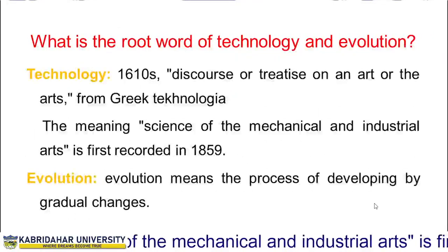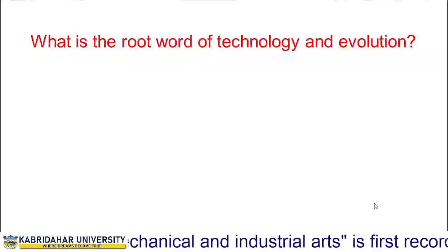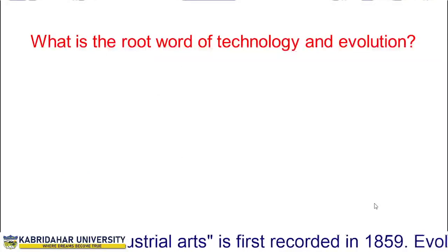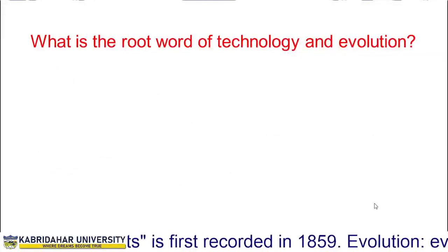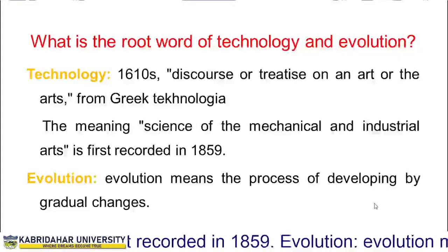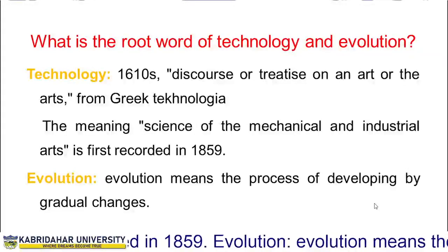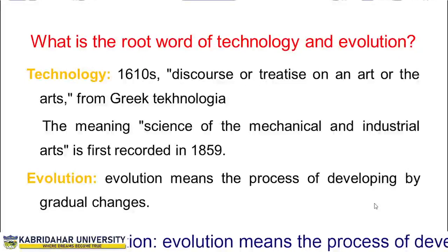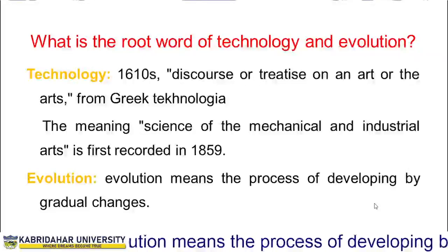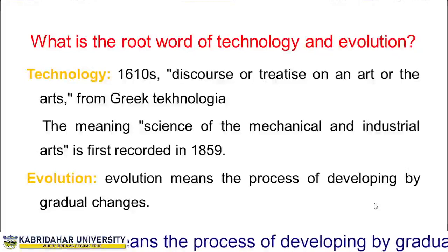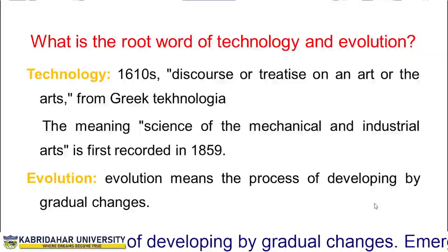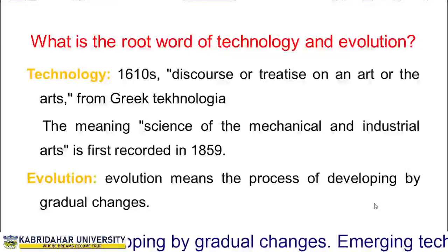When we come to the next slide, we have what is the root word of technology and evolution. The root word of technology in the 16th century was used as discourse or treatise on an art or the arts. When we say discourse, it is about dialogue, and when we say treatise, it is about a paper, thesis, or exposition like that. But in 1859, the meaning became the science of the mechanical and industrial art.